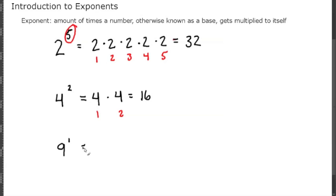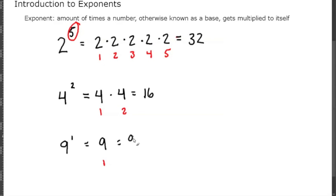9 to the 1 is just 9 times itself 1 time, so 9 to the 1 is just 9.